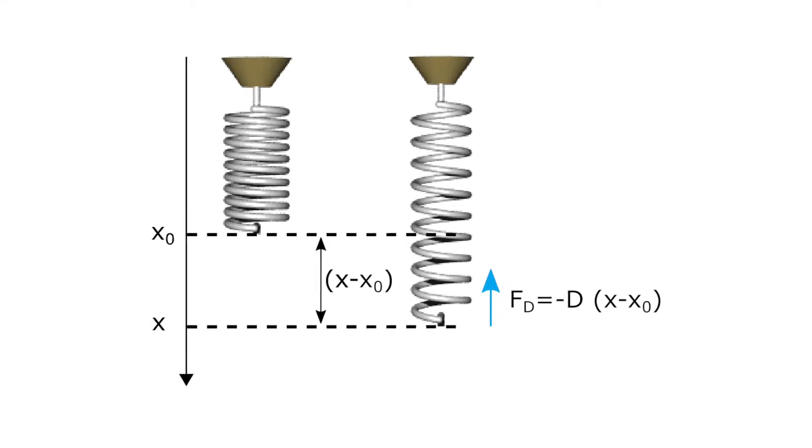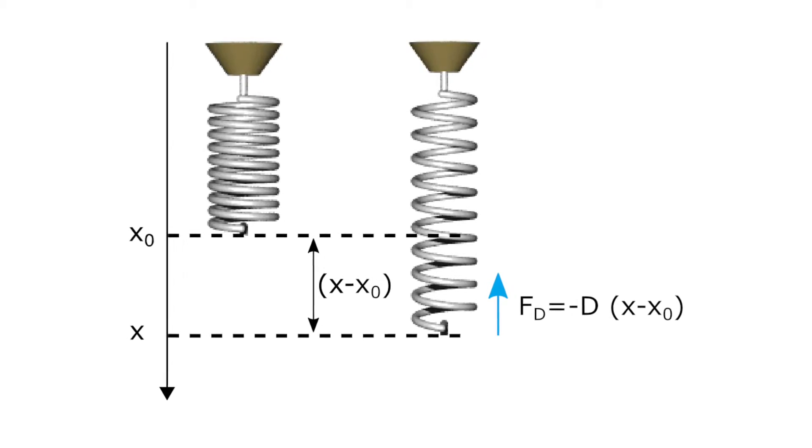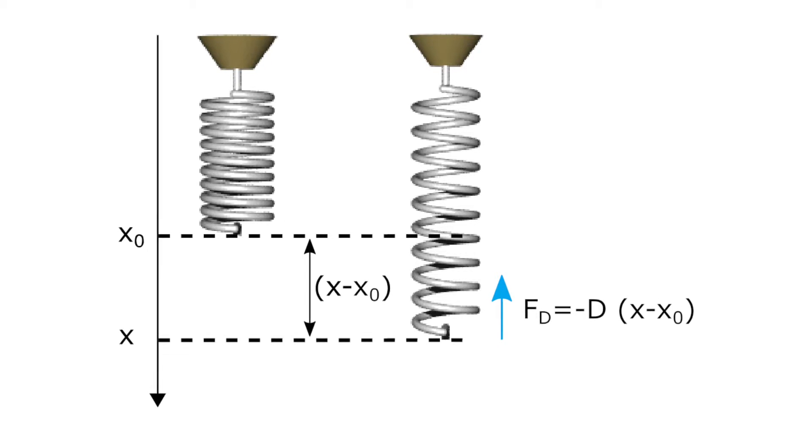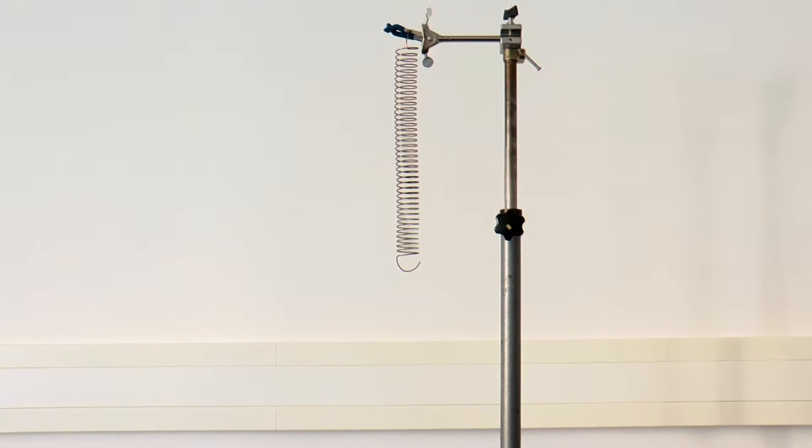If a spring is deflected beyond its rest position, a restoring force acts in the direction of the rest position. This force is proportional to the deflection and is described by Hooke's law. In this experiment, the spring constant of a spring is determined once statically and once dynamically.